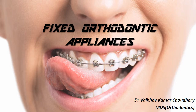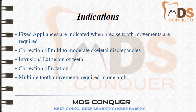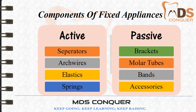Our topic for discussion is fixed orthodontic appliances. These are devices or equipment that are attached to the teeth, which cannot be removed by the patient, and are capable of causing tooth movement. The indications for fixed orthodontic appliances are: when precise tooth movements are required, for correction of mild to moderate skeletal discrepancies, for movements like intrusion or extrusion, correction of rotation, and when multiple tooth movements are required in one arch.